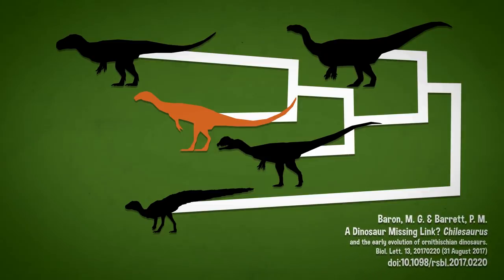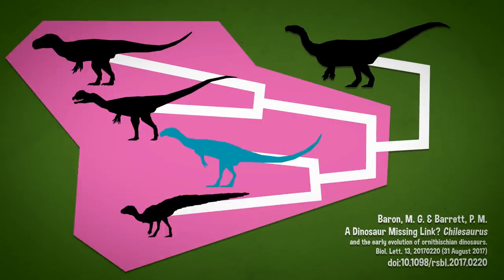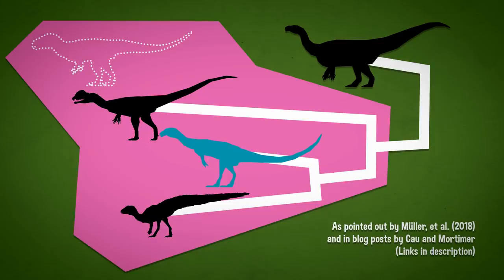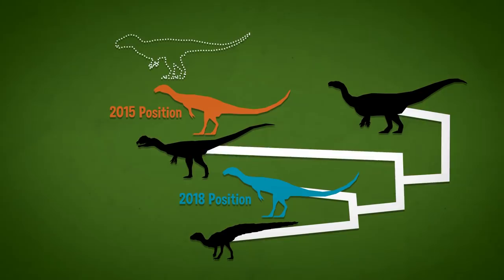Two of the Ornithoskelida paper's researchers plugged Chilesaurus into their character set, and they recovered it as the basal-most Ornithischian. This would bridge the gap between Ornithoskelida's two subgroups. But that matrix doesn't include Chilesaurus' former Tetanuran position. The only way to test whether they're more parsimonious there or at the base of Ornithischia is to use a complete taxonomic sample, and they didn't.